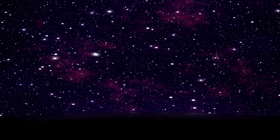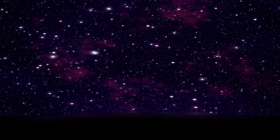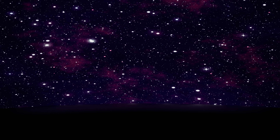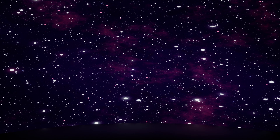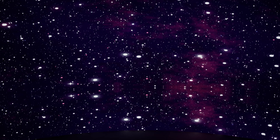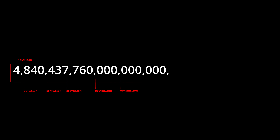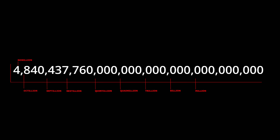You may have noticed that I have been referencing the observable universe. It is theorized by scientists that an unobservable universe could exist with a volume 15,126,368 times larger than the observable universe. If this is true, there could be as many as 4 nonillion, 840 octillion, 437 septillion, 760 sextillion planets in the universe.